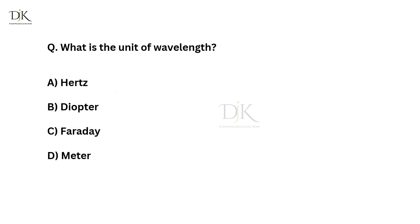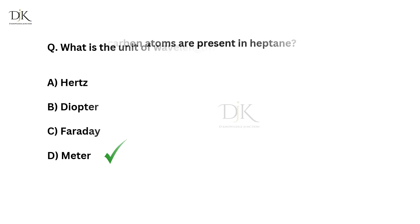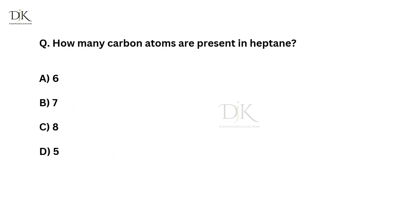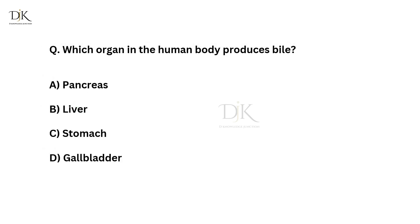What is the unit of wavelength? Correct answer is meter. How many carbon atoms are present in heptane? Correct answer is seven. Which organ in the human body produces bile? Correct answer is liver.